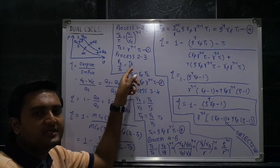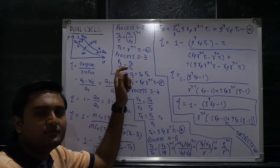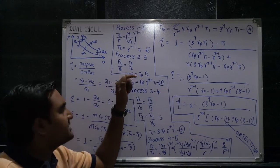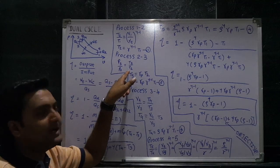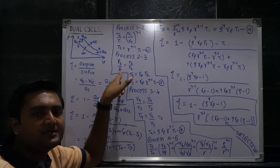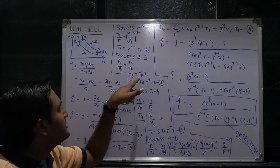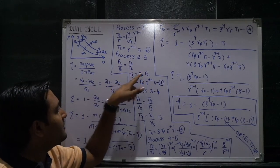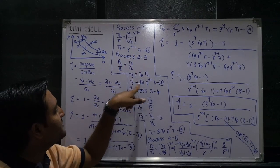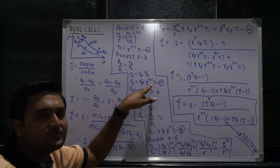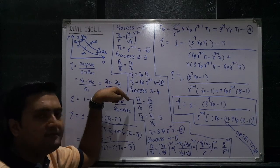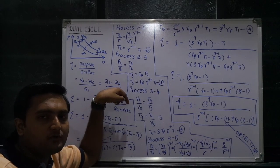For process 2 to 3, it is a constant volume process. Using PV/T = constant: P2·V2/T2 = P3·V3/T3, and since V2 equals V3, we get P3/P2 = T3/T2. So T3 equals the pressure ratio rp times T2. Converting T2 in terms of T1, T3 in terms of T1 becomes rp times r raised to gamma minus 1 times T1.